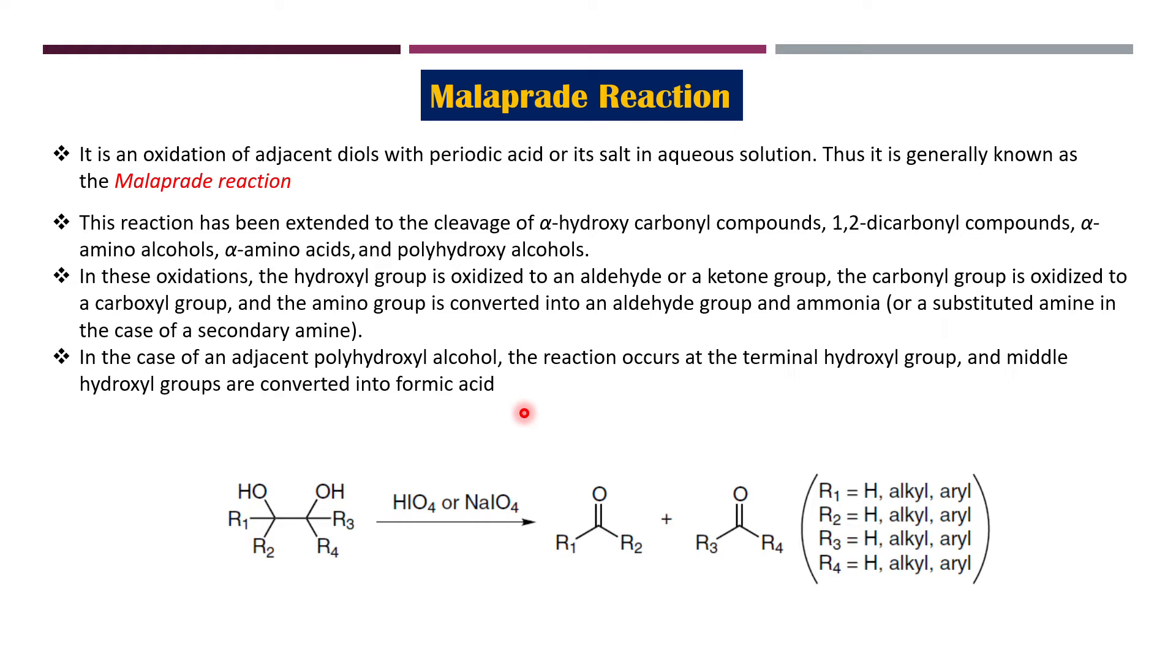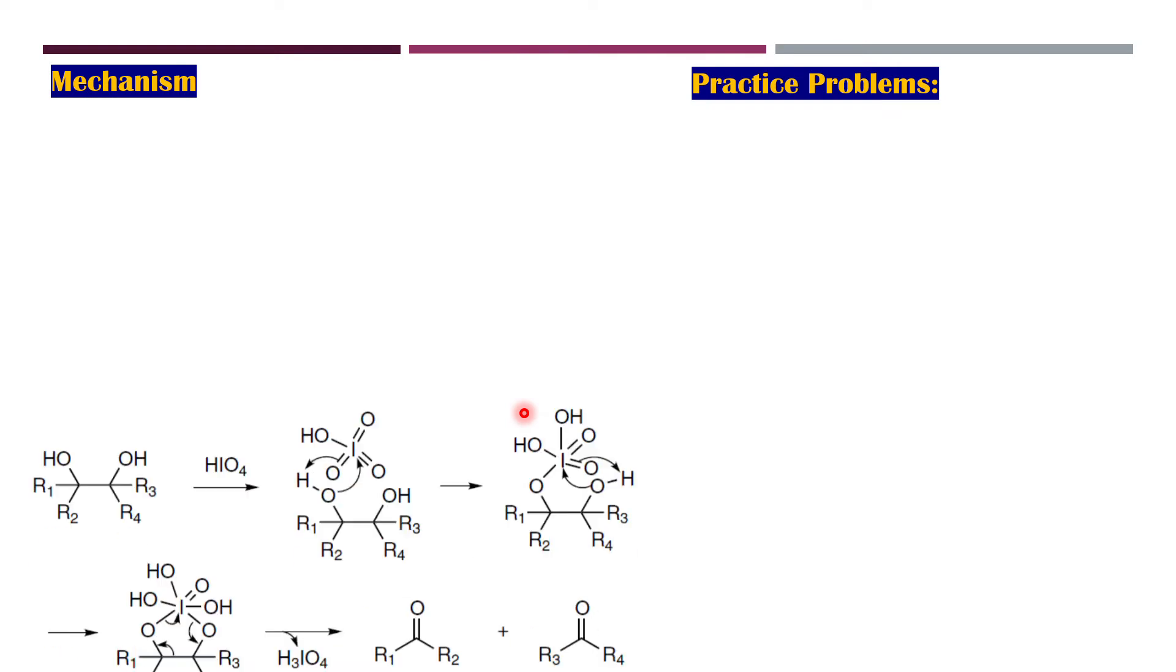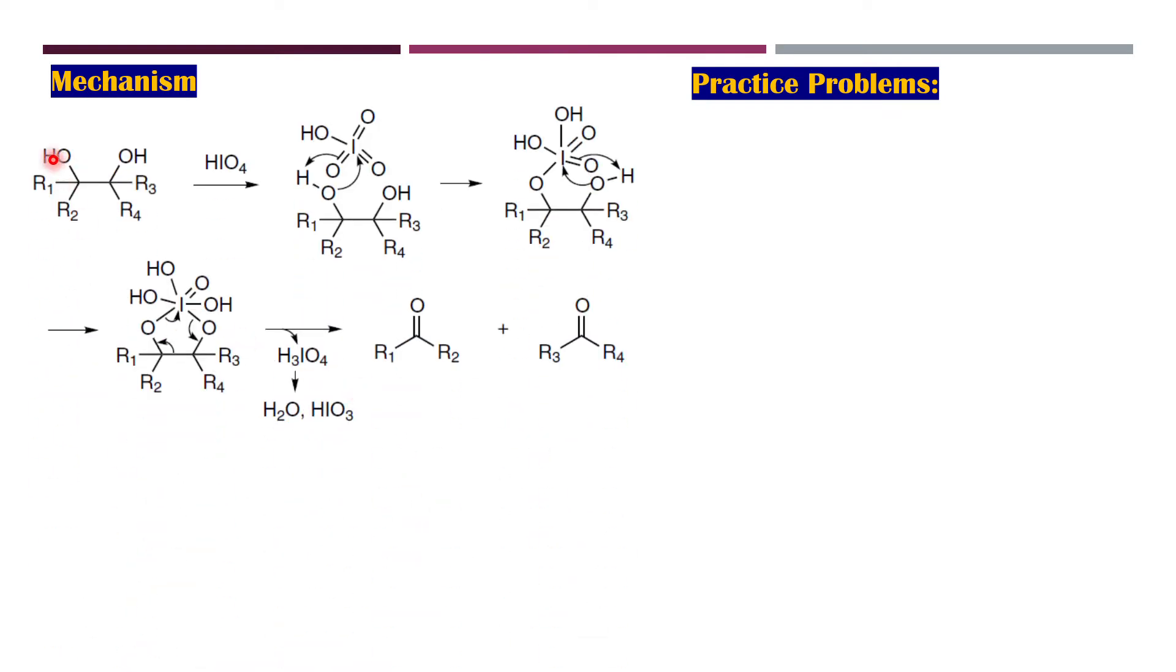So we will see these examples. What is the mechanism out here? You have the diol and then it forms the ester of the periodic acid. As we can see, this is the ester of the periodic acid. And then as you can see, the bond will break from here and leads to the formation of a double bond. This C-C bond is cleaving. So this is basically oxidative cleavage of we will say diols.